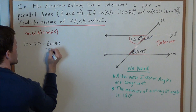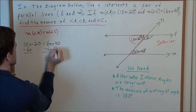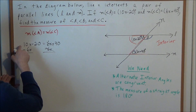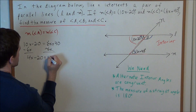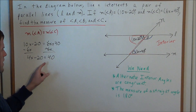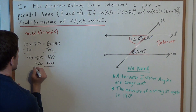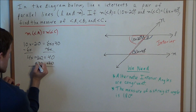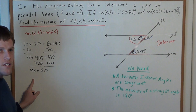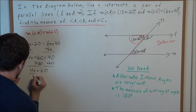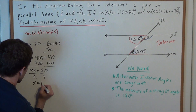We can subtract 6x from both sides — the 6x's will cancel out. We have 10x minus 6x is 4x, so now we have 4x minus 20 equals 40. We can add 20 to both sides: the minus 20 plus 20 will cancel, giving us 4x equals 60. Now to solve for x we divide by 4, so x equals 15.